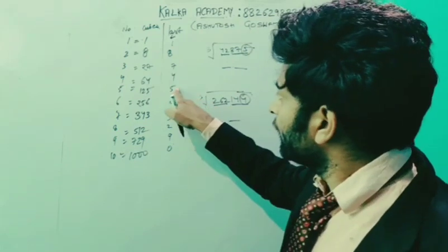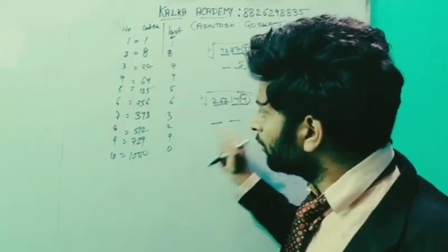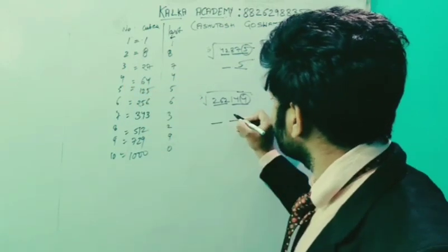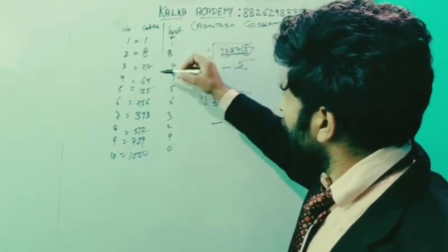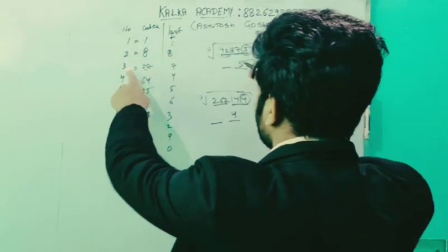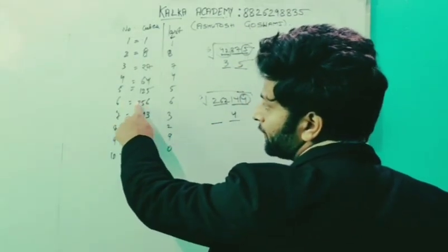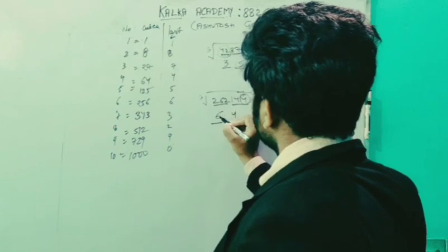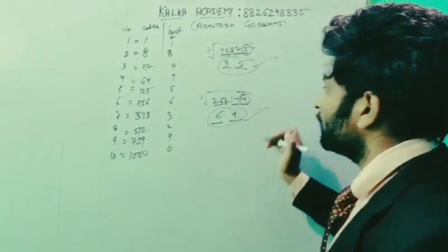For 262144, this number is bigger than 216. This number is 6. The cube of 64 is 4, so the answer is 64. This number is simple.